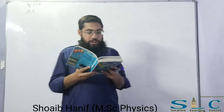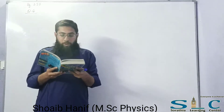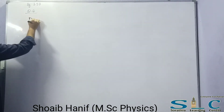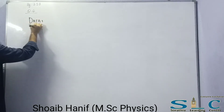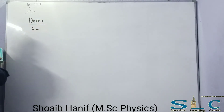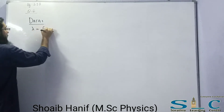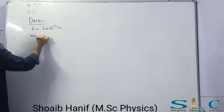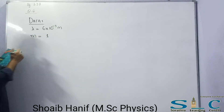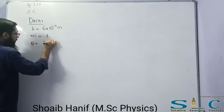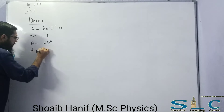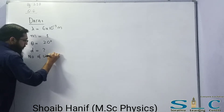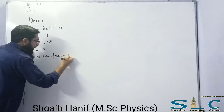In question number 6, we need to find D and number of lines. The given data: wavelength is 6×10⁻⁷ meter, m = 1, angle = 20 degrees. We need to find D and number of lines per millimeter.